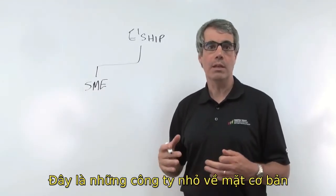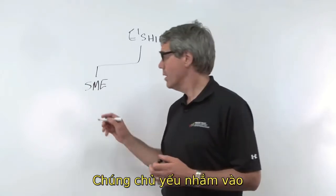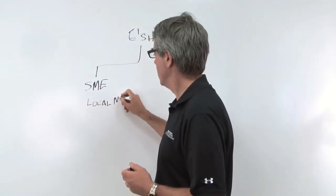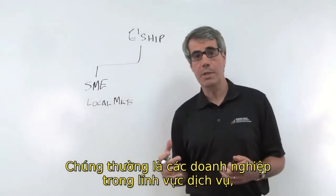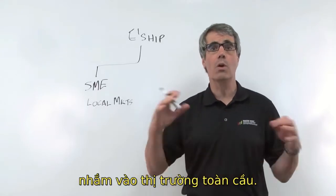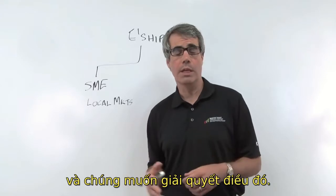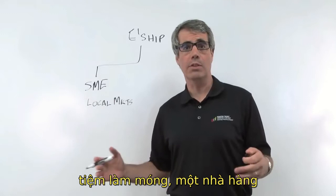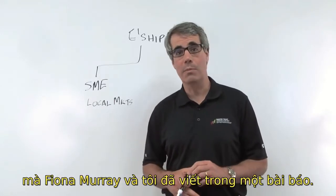These are fundamentally small companies that will stay small, and they may have been around for a while. They're focused on local markets — often service businesses servicing a local opportunity, but not something looking to go global. They know there's a need locally and want to address it. This could be a dry cleaner, a nail salon, a restaurant, or a pizza parlor as referenced in the paper that Fiona Murray and I wrote.